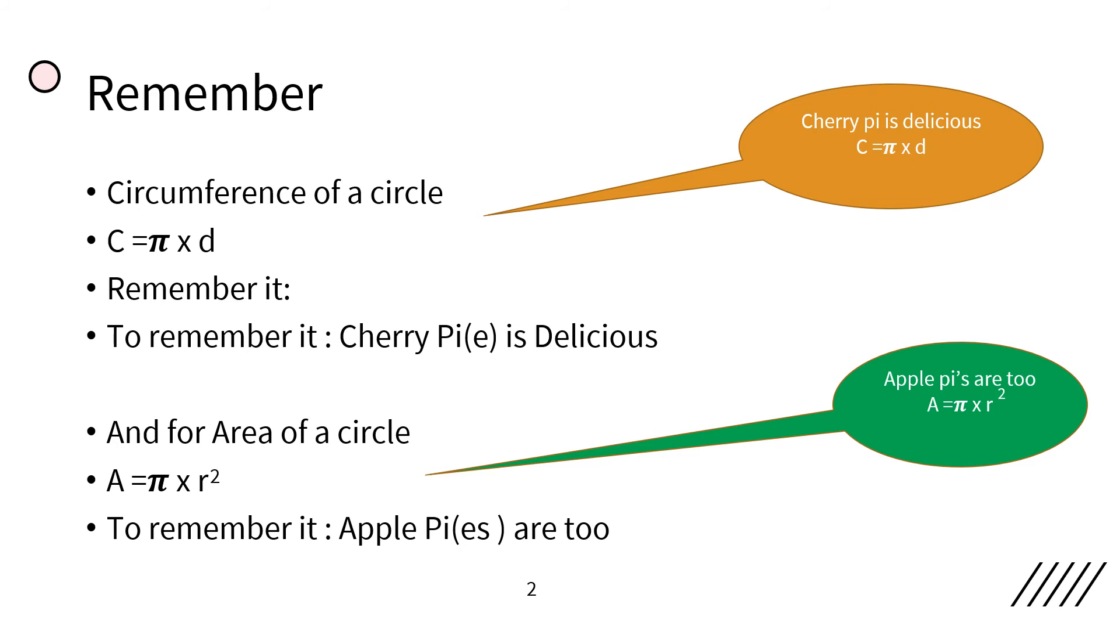And for area of a circle, area equals Pi times radius squared. To remember this, apple pies are too.